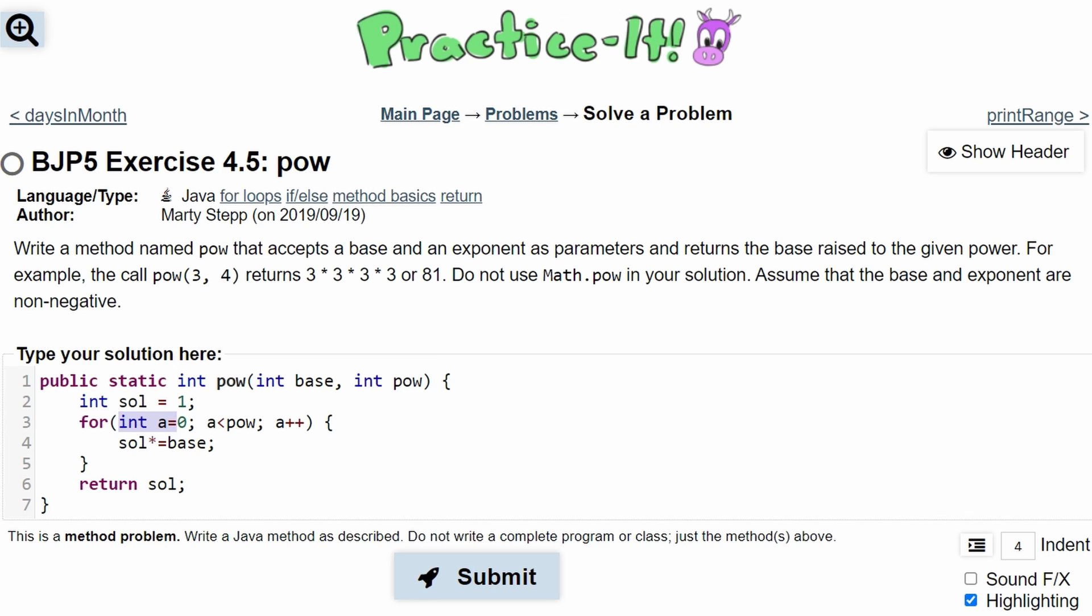The first time we go in this for loop, int a is equal to 0, a has to be less than power, and we're going to increment a every time. So the first time we're in this for loop, our a is 0, our solution is 1. We're going to set solution times equal to the base. Well, solution, which is 1 times 3, which is the base, is equal to 3.